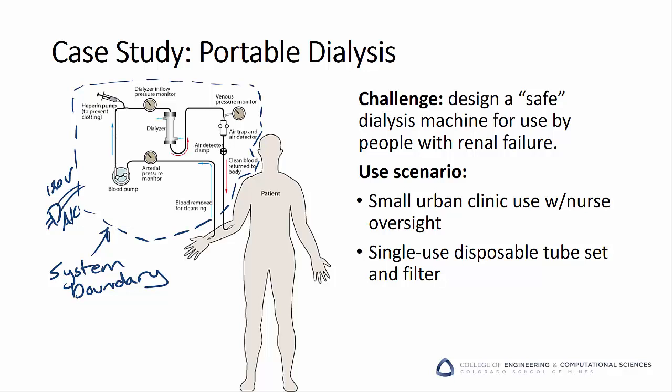As a team, we developed the diagram shown that captures the major process components for dialysis, and then clearly marked out what is part of our system. We also know from our client that the primary use scenario would involve use in a small urban clinic with oversight by a nurse. Finally, we know that the concept we are pursuing would involve single-use disposable tube sets and filters for the machine. It will be plugged into both the grid for power and our patient's blood system — sort of a Keurig for dialysis.